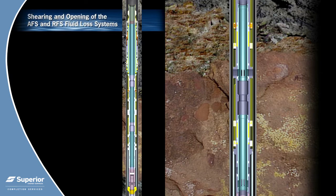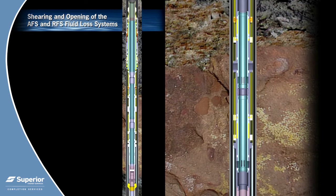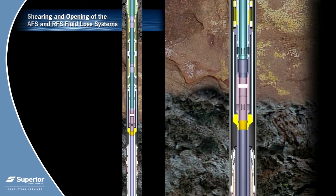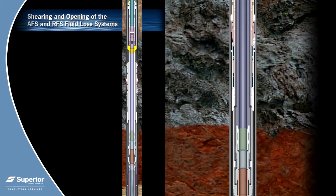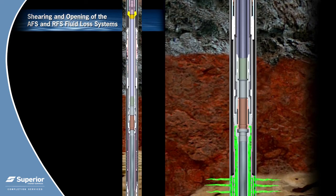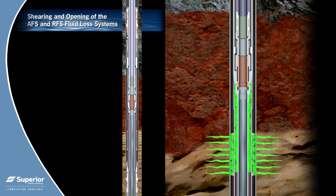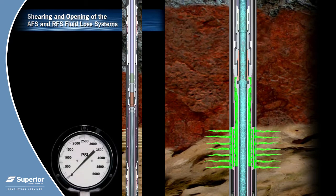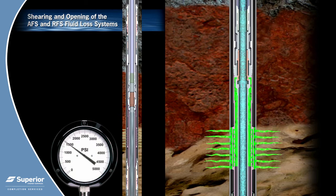This is accomplished by closing the upper hydraulic multi-service valve and opening the lower hydraulic multi-service valve. This will allow pressure to communicate through the HAWC system down the production tubing to the ID of the annular flow valve and the radial flow valve.